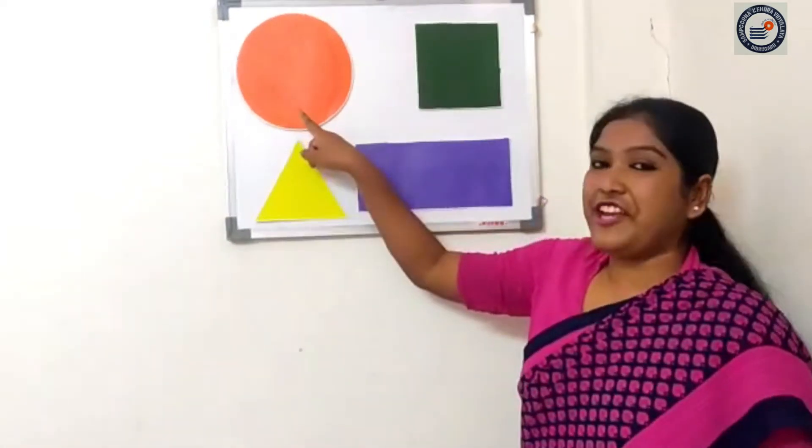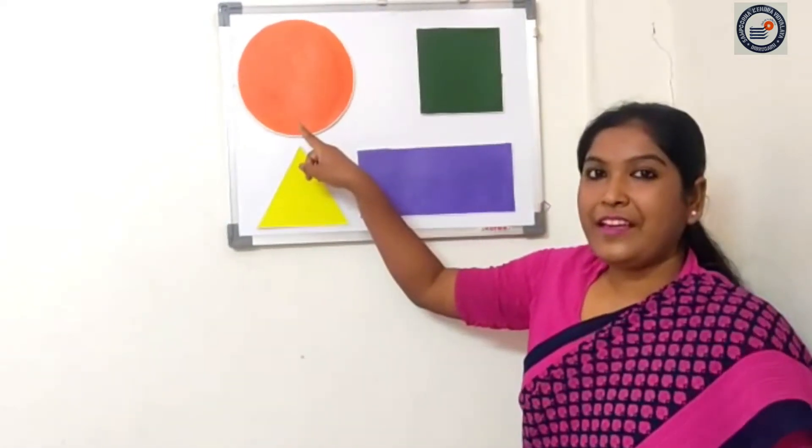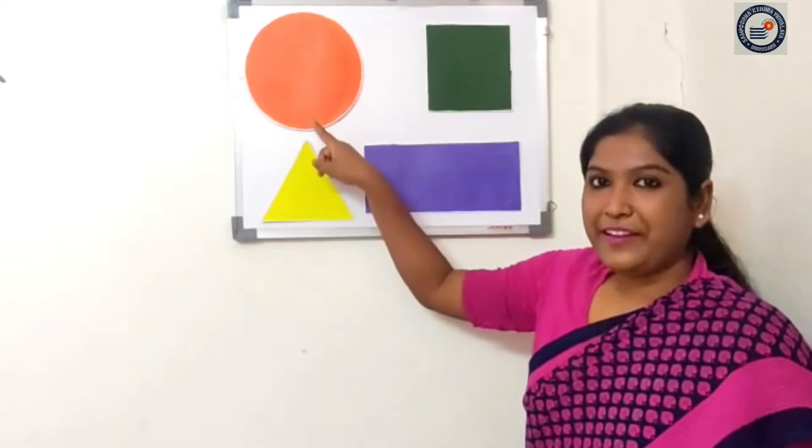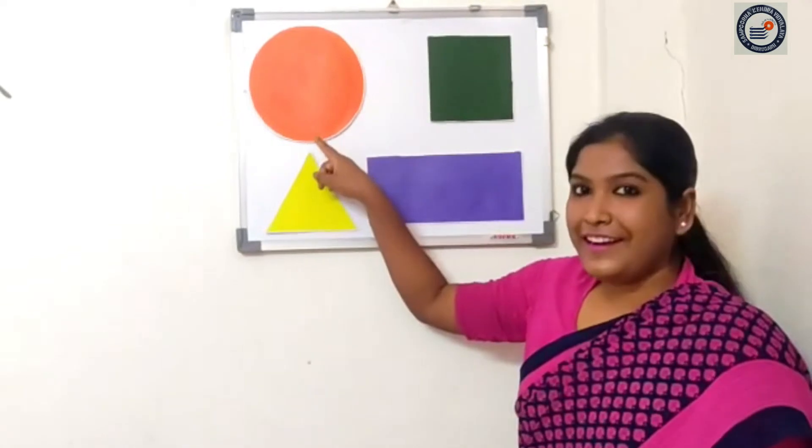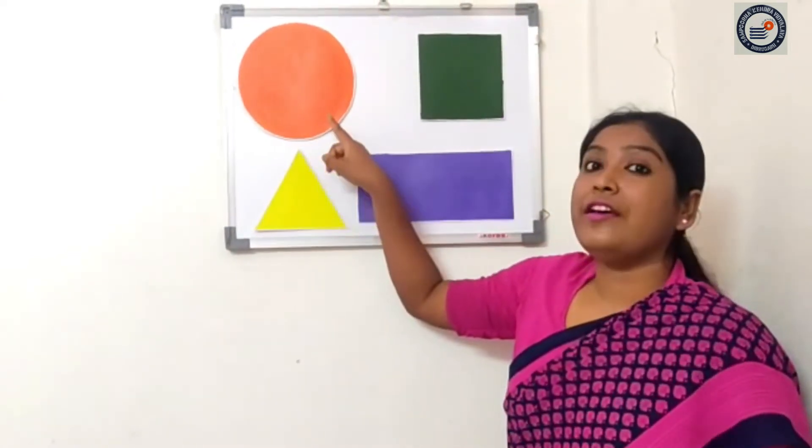One, two, three, four, five, six, seven, eight, nine, ten. Okay students, so now tell me what is this shape? Yes, what is this shape? Someone told me just now. Yes, this is a circle.